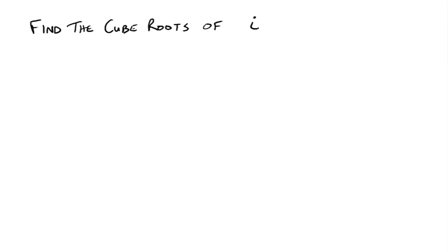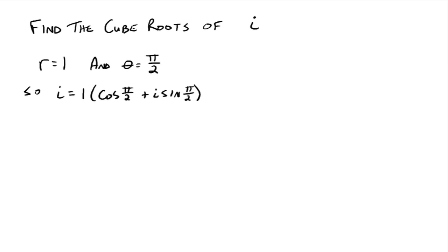Let's look at an example: find the cube roots of i. First we find its polar form. We note that R equals 1 because i is the same as 0 plus i. And theta — picture the unit circle — i is at the top, so theta equals pi over 2. So i can be written as 1 times cosine of pi over 2 plus i sine pi over 2.